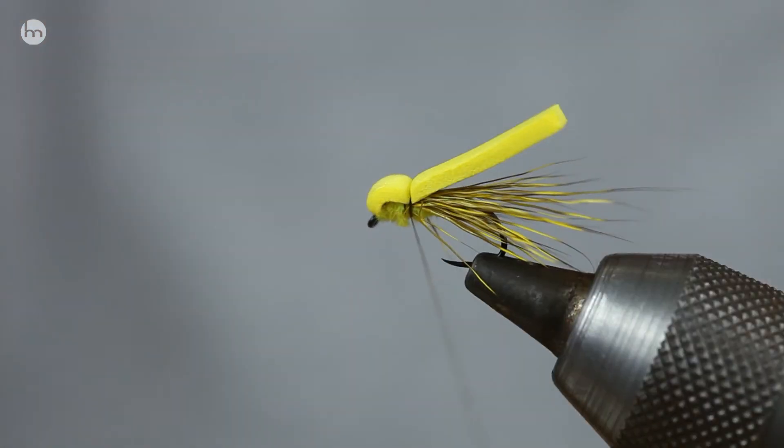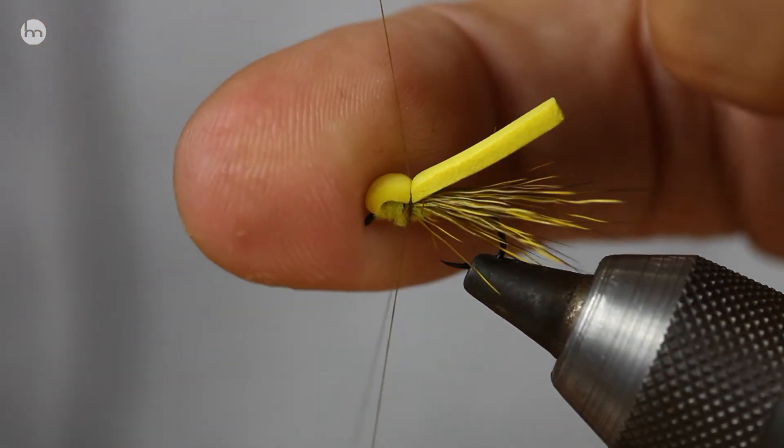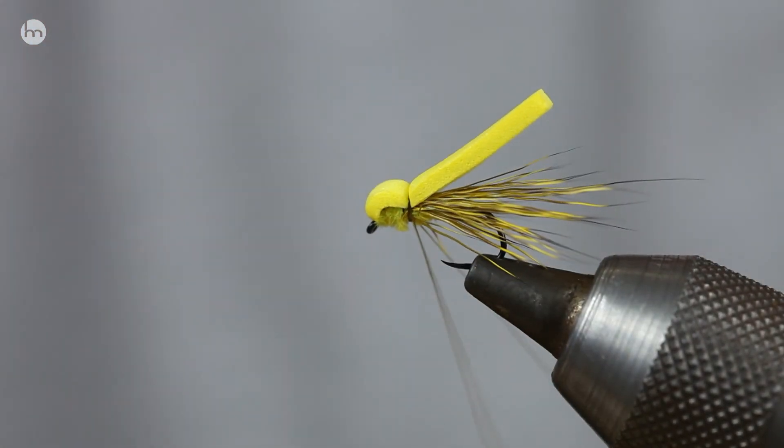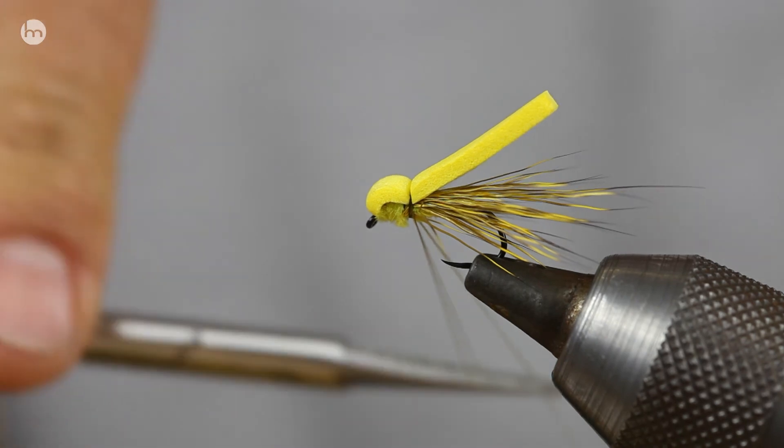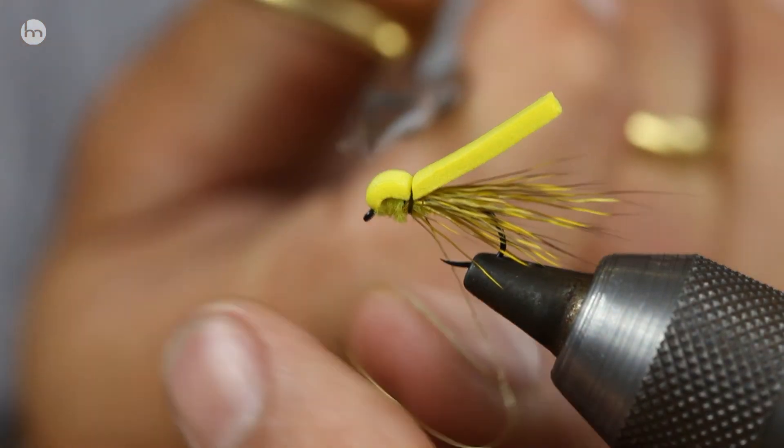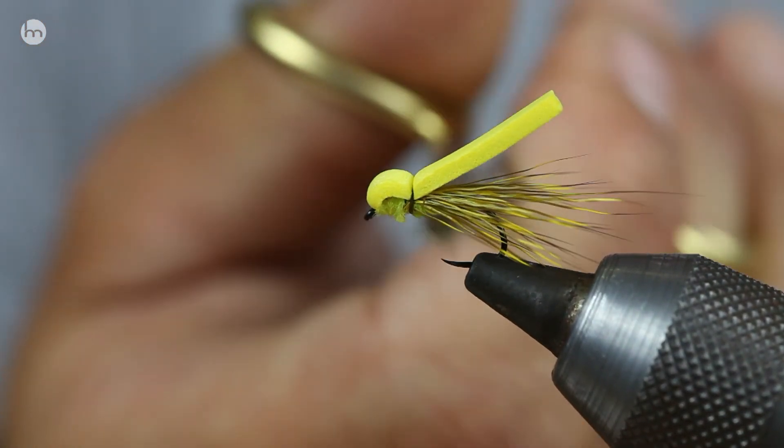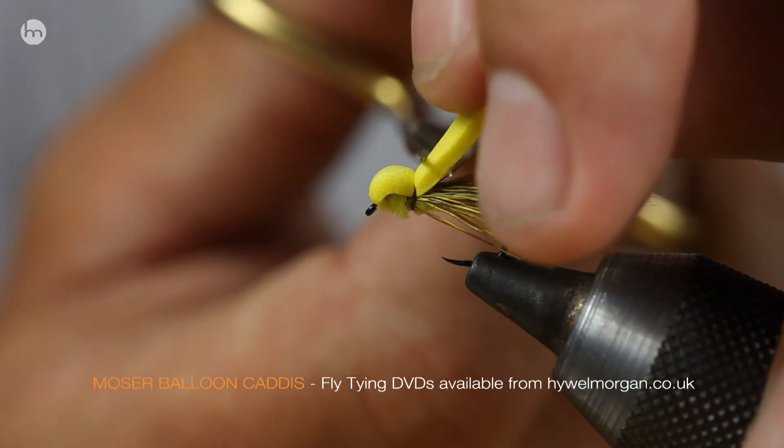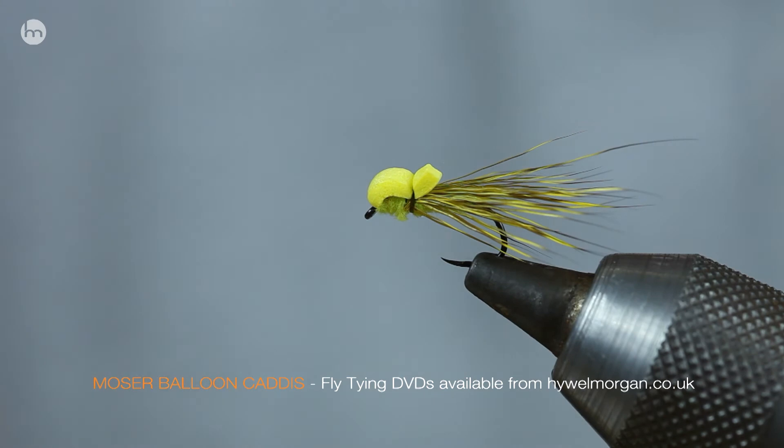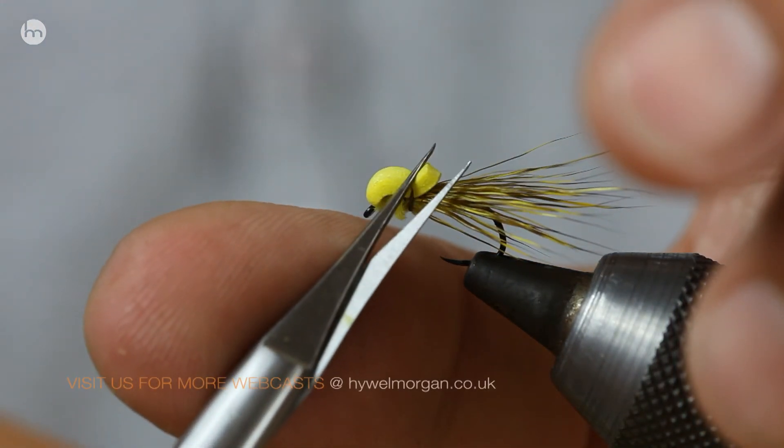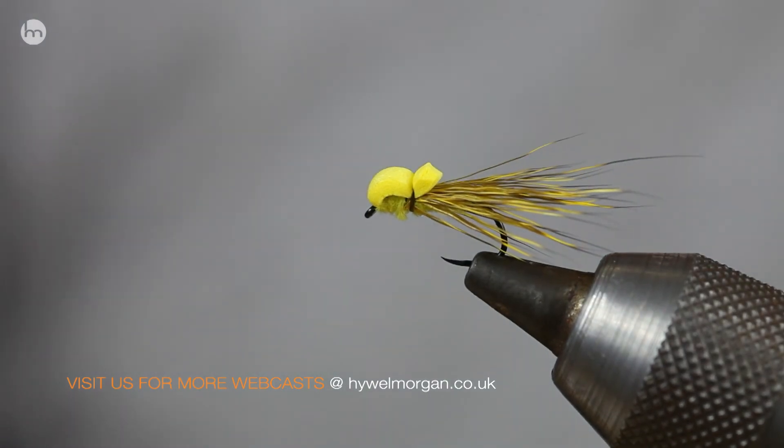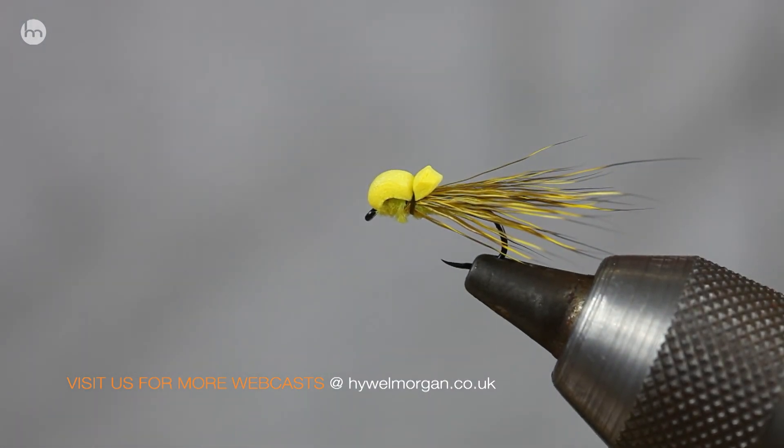And then what we're going to do, we finish it there. Last but not least, get your foam and cut it off. If you want to be, you can just trim it off there. And there you go, the Moser balloon caddis. It's deadly.